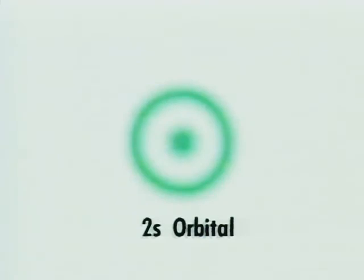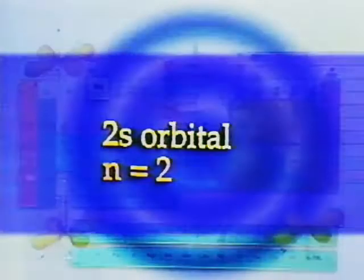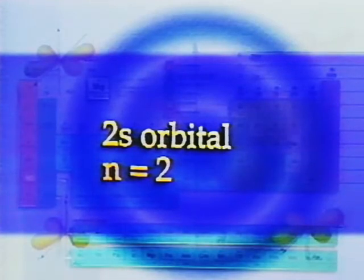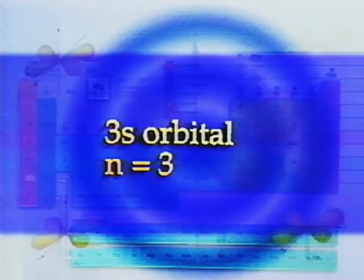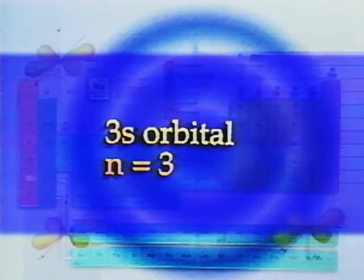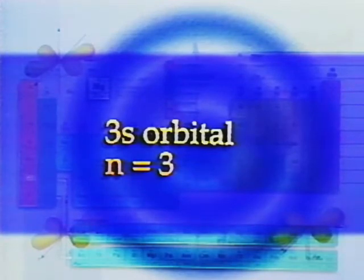A 2s orbital is spherical; since n equals 2, it has a radius greater than that of the 1s orbital. For higher values of n, 3s, 4s, 5s, and other such orbitals exist.